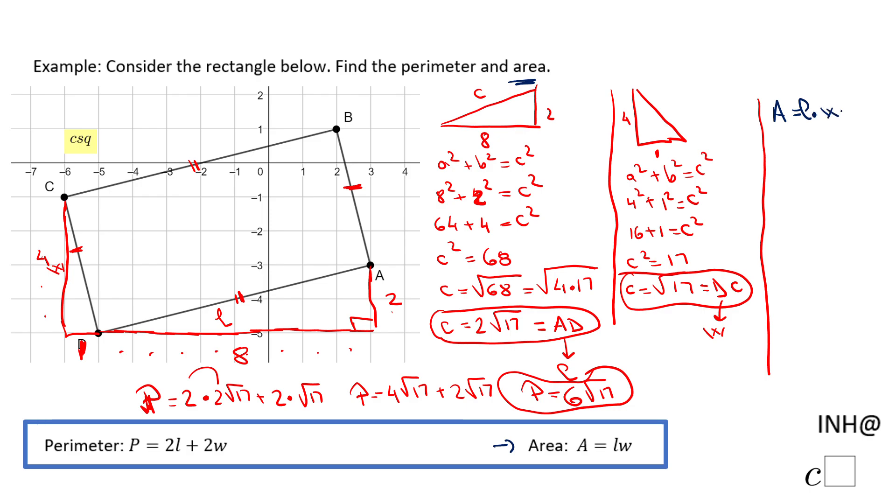In this case, I'm using length times width. The length is 2√17 and the width is √17. So we have 2 times—when we multiply these square roots, √17 times √17 equals 17.